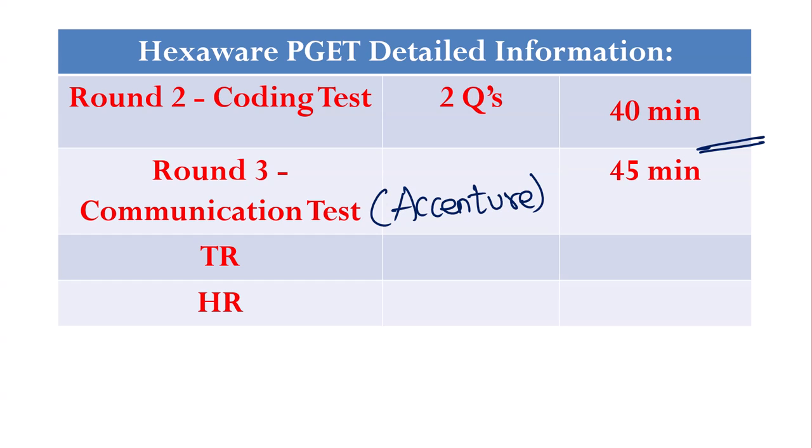Communication test is elimination, not like Accenture. In Accenture, whether people performed or not, they are given an option. But here it is elimination round. I'll just give you the statistics. One of the colleges, six people cleared coding. But communication cleared only one people. One divided by six. Cutoff is high and more elimination happening in communication round as well. You need to be very much clear. Then once you are done with that, then you have TR and HR.